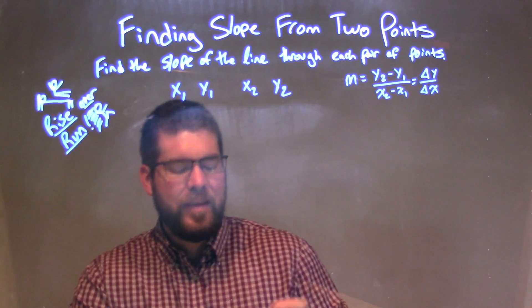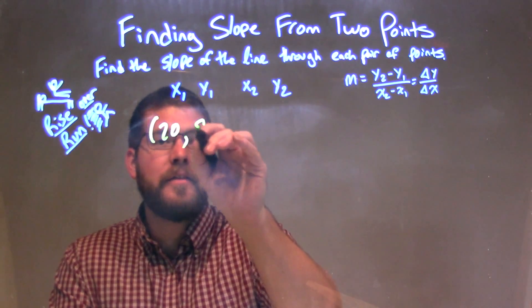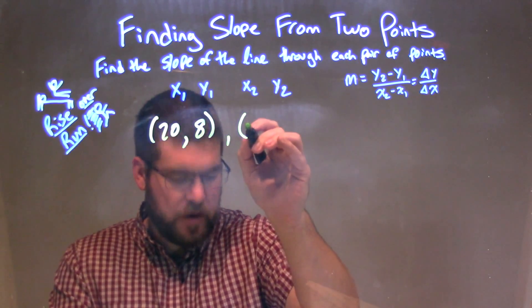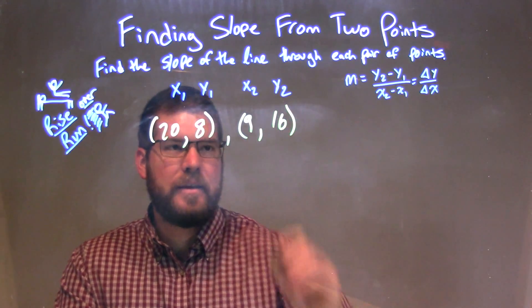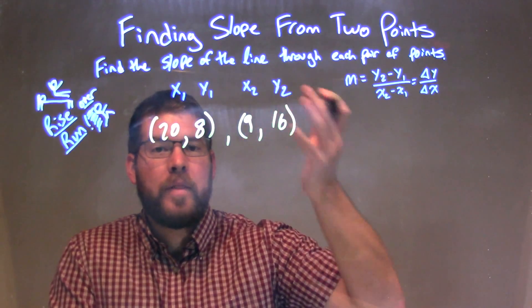So if I was given these points here, these two points, 20 and 8 is my first point, my second point being 9 and 16. So I have my two points here, and I need to find the slope.